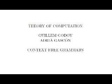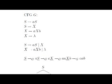In this video, we'll introduce the basic concepts related to context-free grammars. A context-free grammar is essentially a set of rewriting rules where the left-hand side of every rule has length 1. In this context, rules are also called productions.